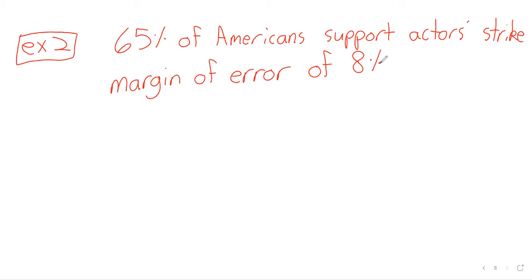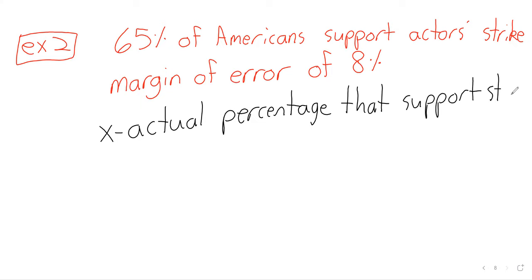And there are very standard statistical tools that people can use to try to get at that. Maybe we have an 8% margin of error here. So maybe as high as 73%, as low as 57%. Again, let x be the actual percentage that support the strike.